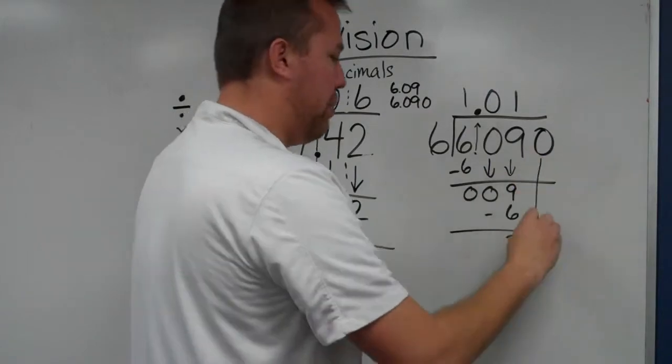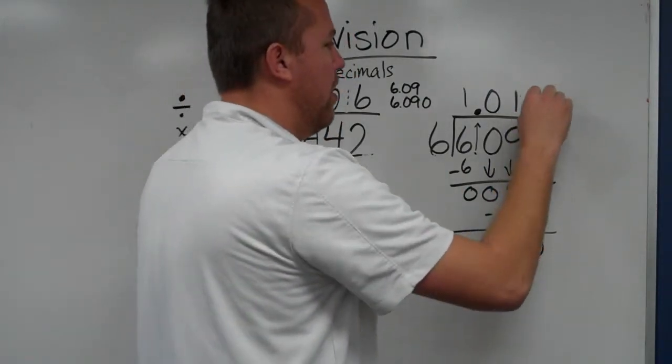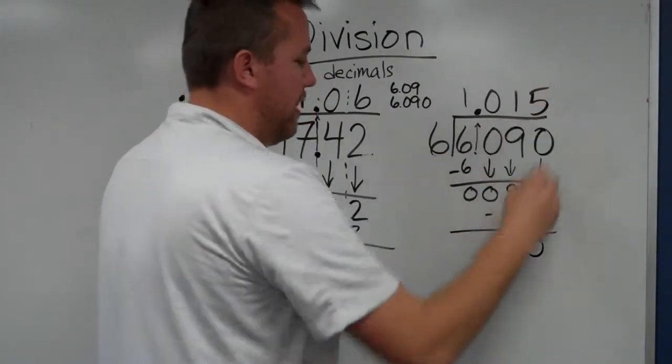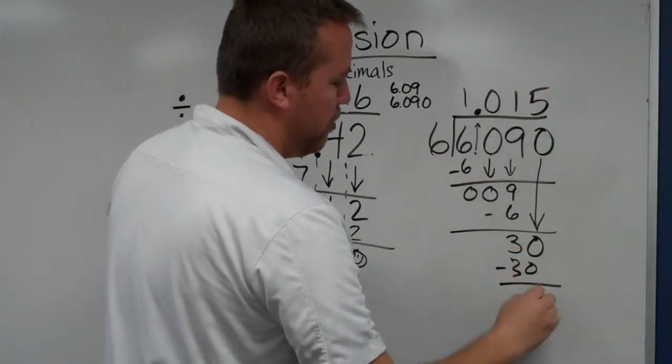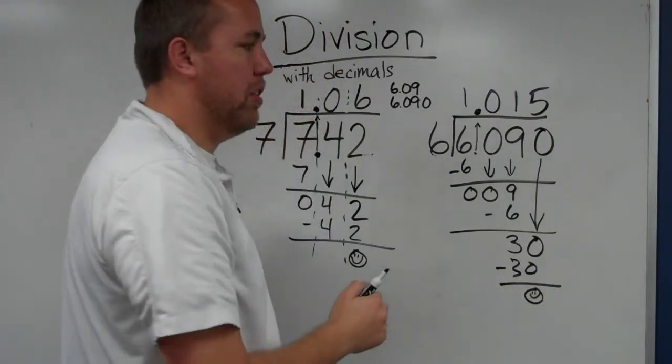And then, so we add the 0. Oh, look, brother can bring down. So brother brings that down. 6 now goes into 30, 5 times. 6 times 5 is 30. Sister subtracts, get 0. Brother can't bring down. So we're set.